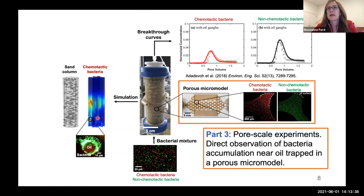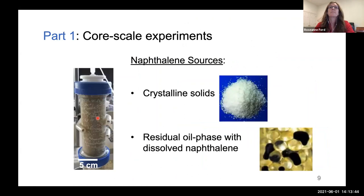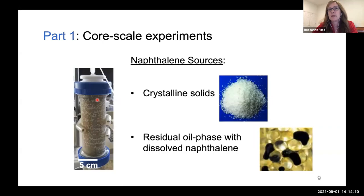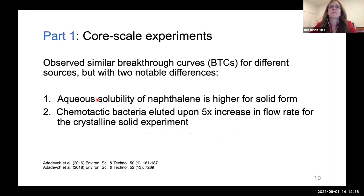For part one, Adadaville and co-workers conducted experiments with two different forms of chemoattractants distributed throughout a sand-packed column: naphthalene as a crystalline solid, and naphthalene dissolved within the oil HMN, heptamethylnonane. The crystalline solids are roughly the same size as sand grains, and we expect the oil blobs to be comparable in size as well. Interestingly, they reported similar breakthrough curves for both sources, although the aqueous solubility of naphthalene is higher for the crystalline solids than for the oil phase sources.